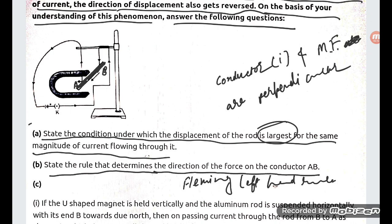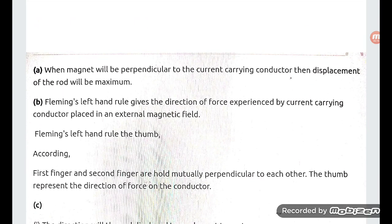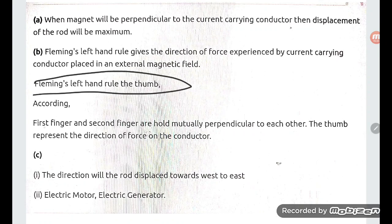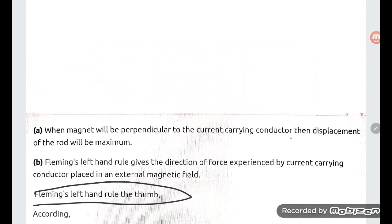So you can see, the force will be backward. AB will be backward. What will be the Fleming left hand rule? The first finger, second finger, held mutually perpendicular to each other. The thumb represents the direction of force on the conductor. So this is it. Next, last one.